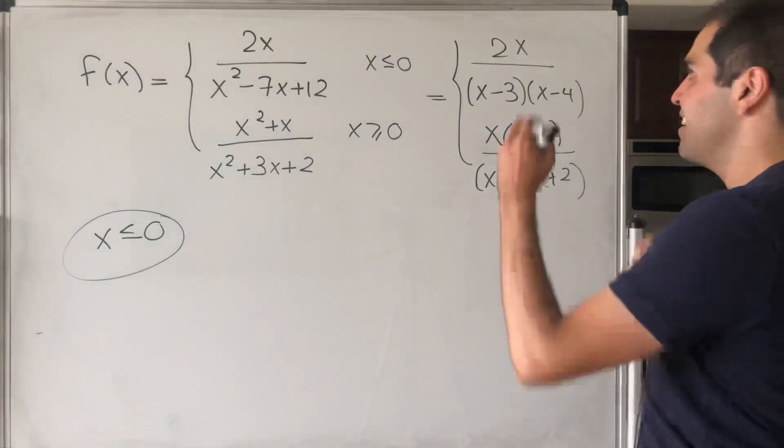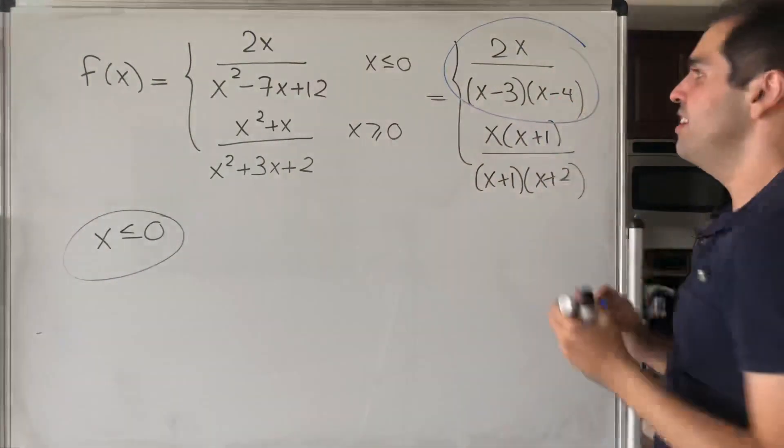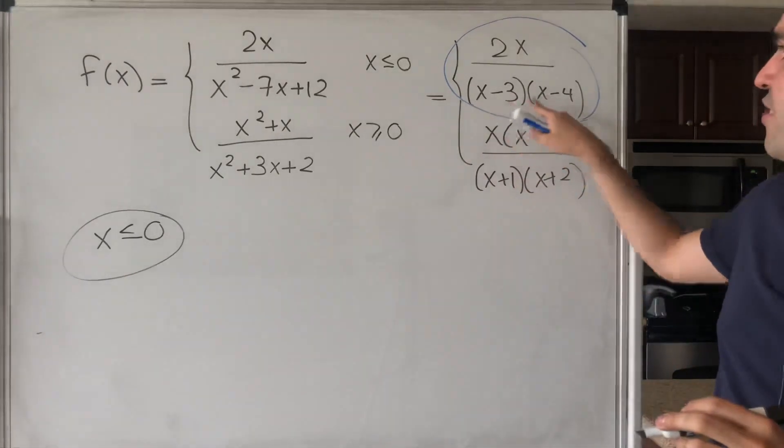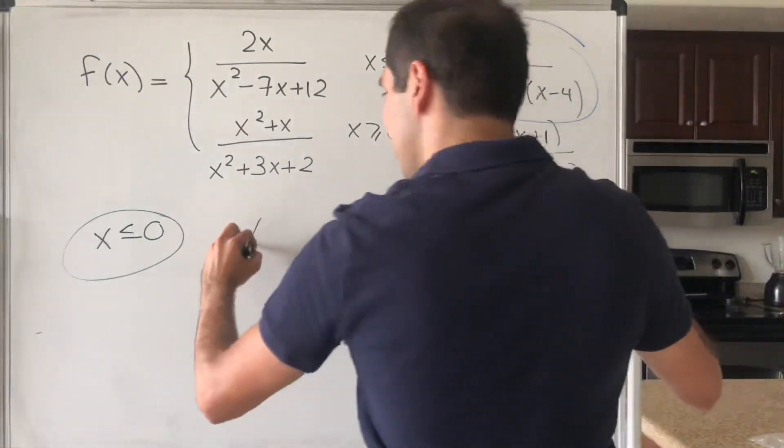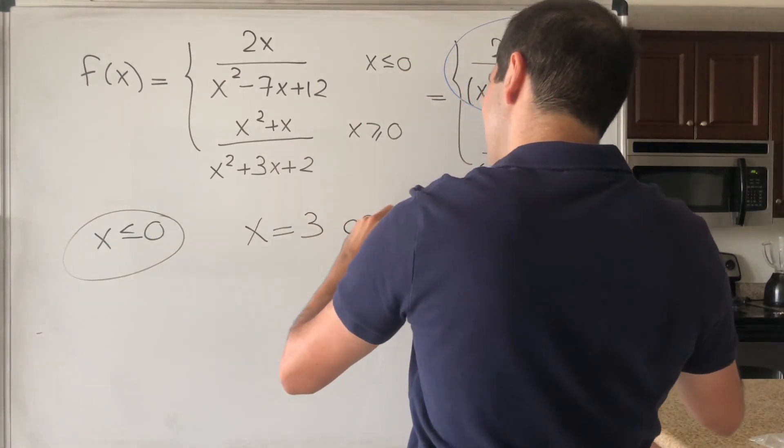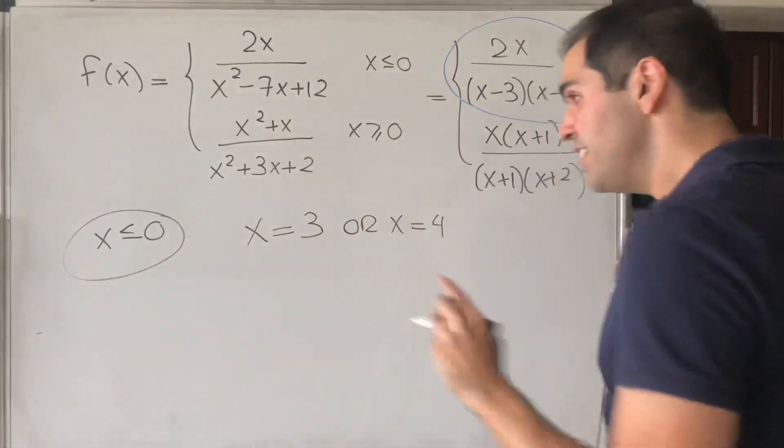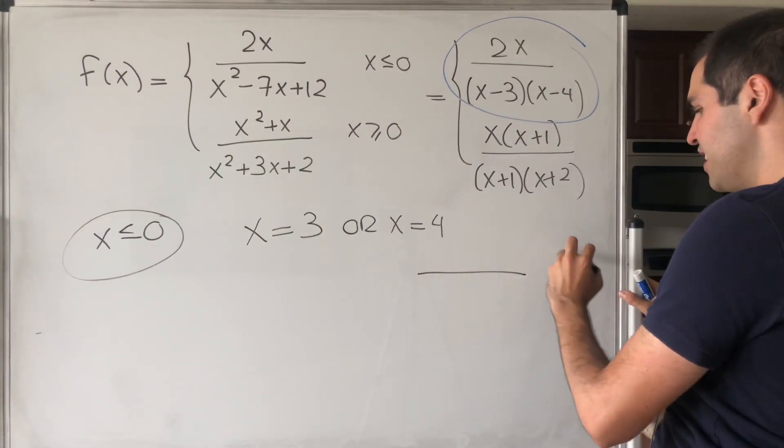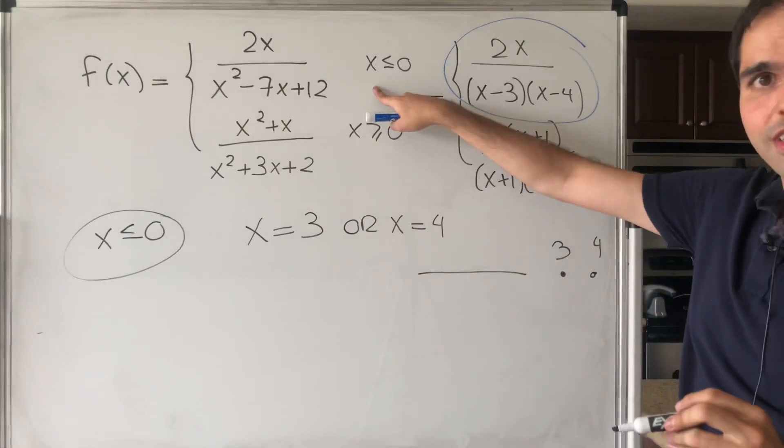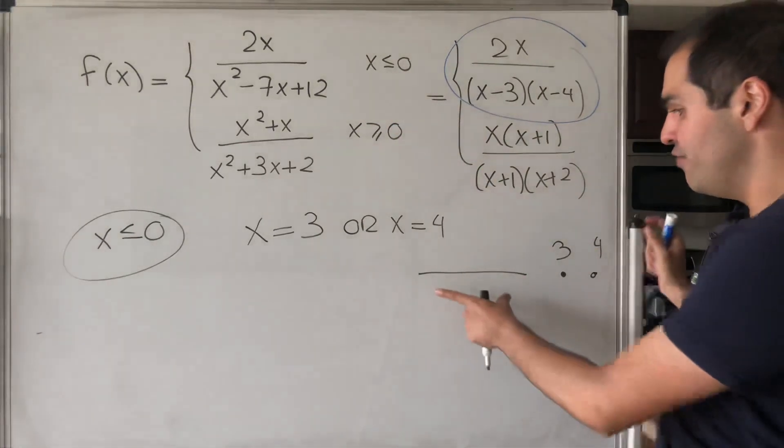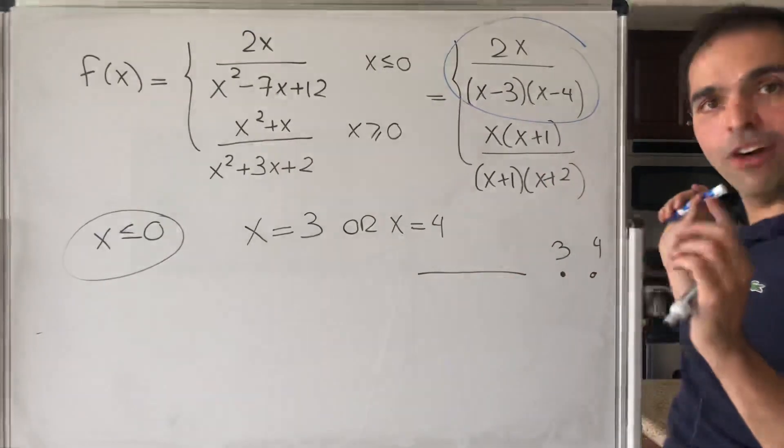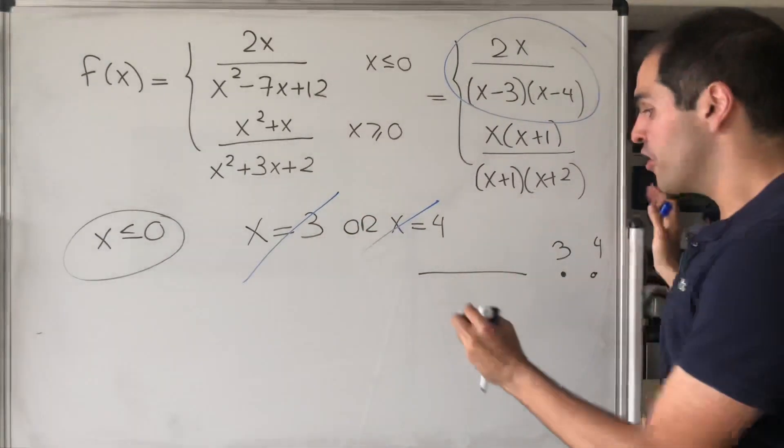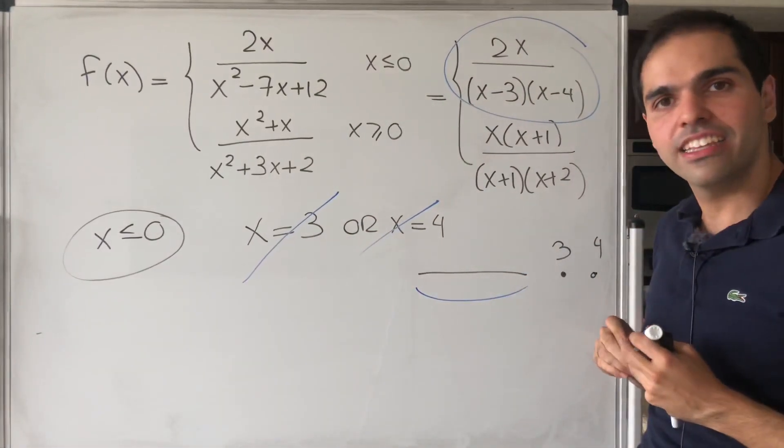If x is negative, we have to use this definition. But the only cases where it's discontinuous is if the denominator is 0, so x equals 3 or x equals 4. But here's the thing: 3 and 4, they're not in our domain of definition, because x is negative here, but 3 and 4 are outside. So in fact, those points don't really matter, because we're just focusing for negative x.